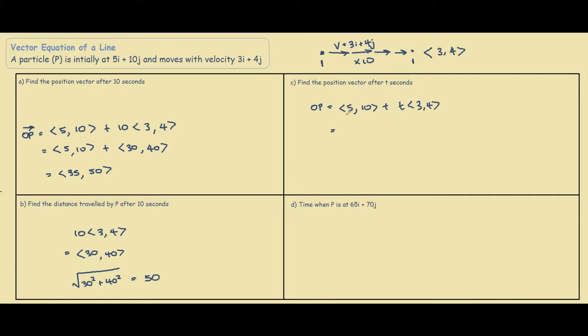So remember this notation, this will be the i's and this will be the j's. So if we group up our i's, we actually have 5 plus 3t. This whole section is our i, and then we have 10 plus 4t as our j.